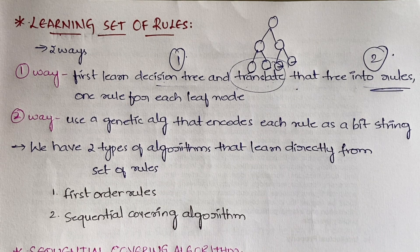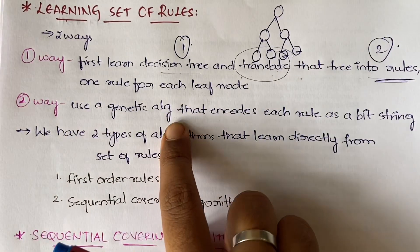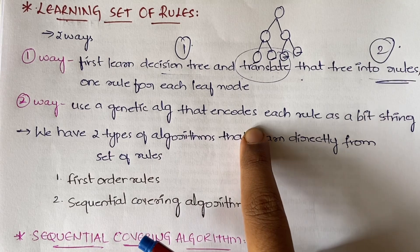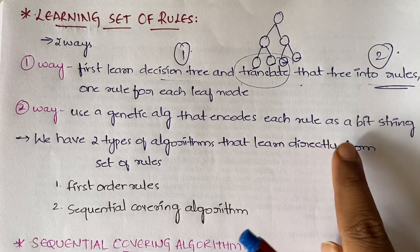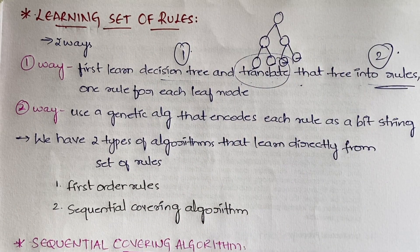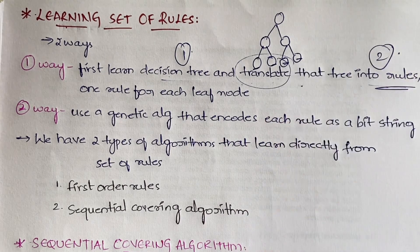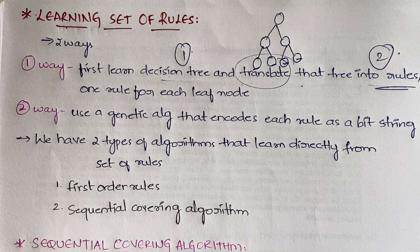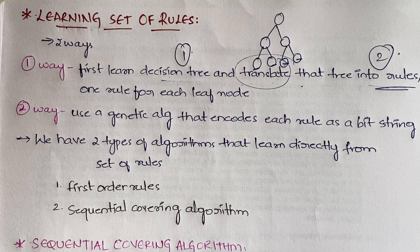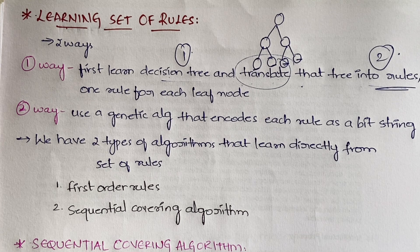The second way is by using the genetic algorithm. The genetic algorithm will encode each rule as a bit string. So in the decision tree approach we define a rule per leaf, whereas in the genetic algorithm approach we express each rule in terms of a bit string.